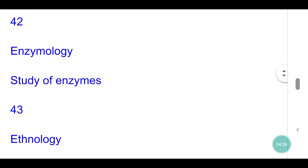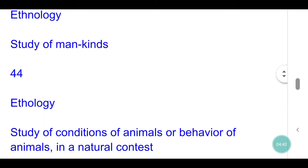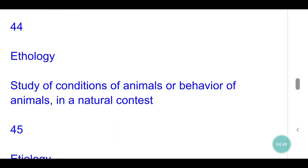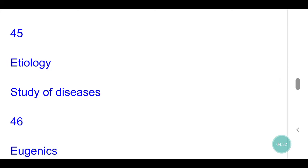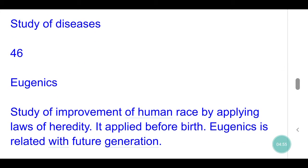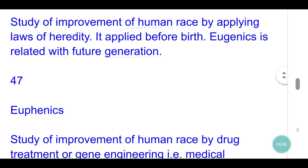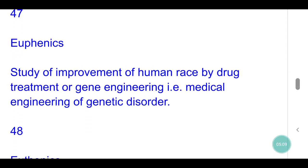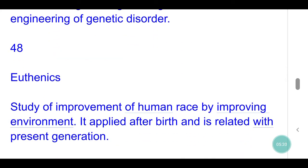Enzymology: study of enzymes. Ethnology: study of mankind. Ethology: study of behavior of animals in a natural context. Etiology: study of diseases. Eugenics: study of improvement of human race by applying laws of heredity; it is applied before birth and is related with future generations. Euthenics: study of improvement of human race by improving environment; it is applied after birth and is related with present generations.